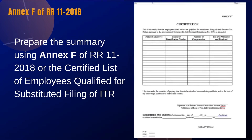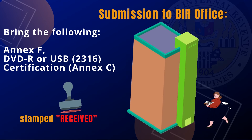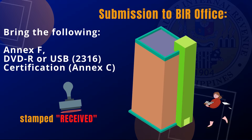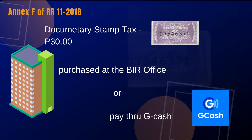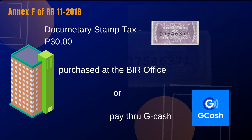In cases of additional pages or attachments to the certification, a reference statement to the additional pages or attachment shall be clearly indicated in the certification with the signature of the certifying employer or its duly authorized representative likewise indicated at the bottom of all the pages. Submission of unnotarized certified list may be allowed by the Bureau provided that all the pages attached to the certification are duly signed by the certifying employer or its duly authorized representative.